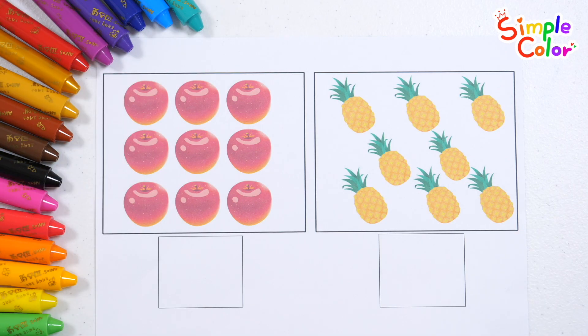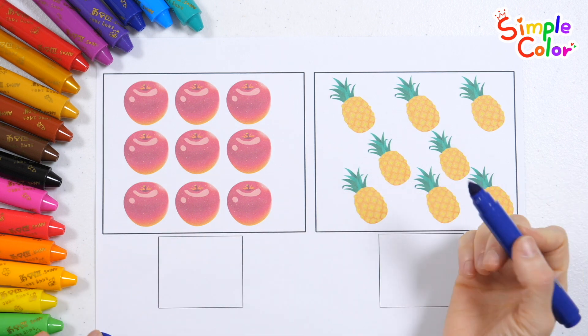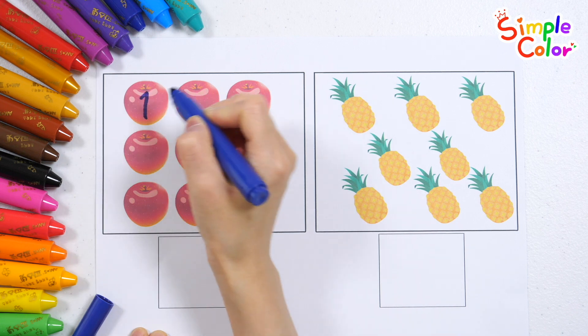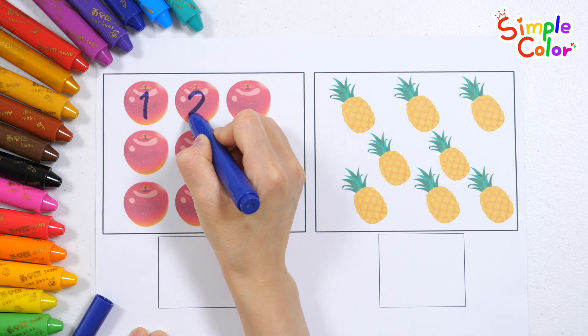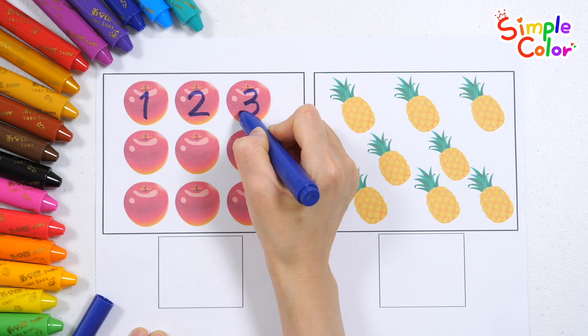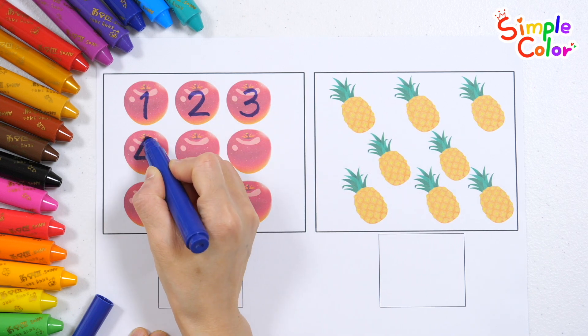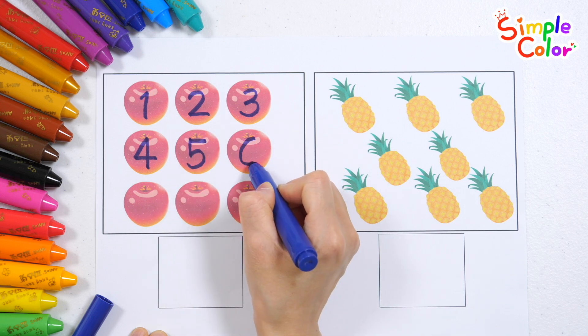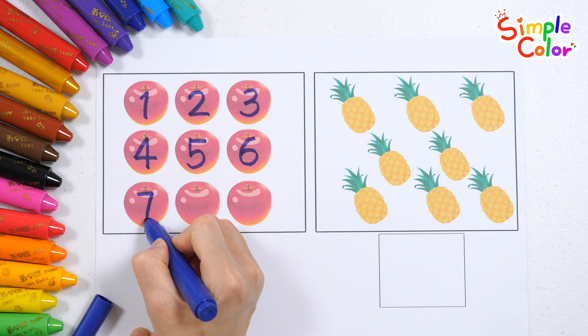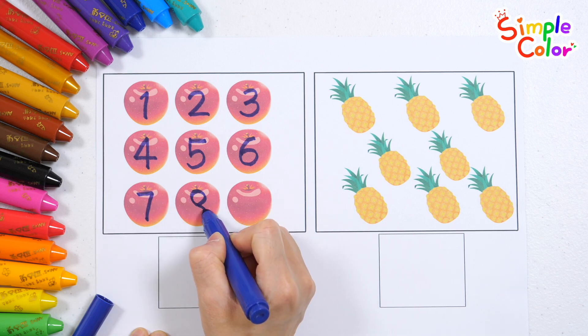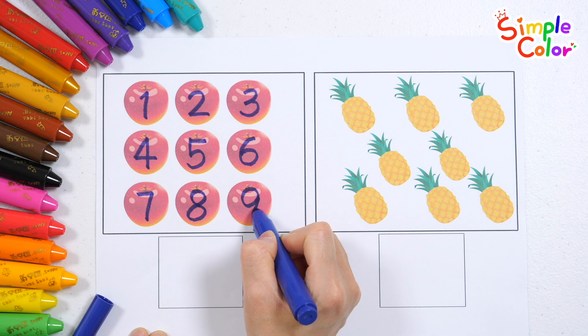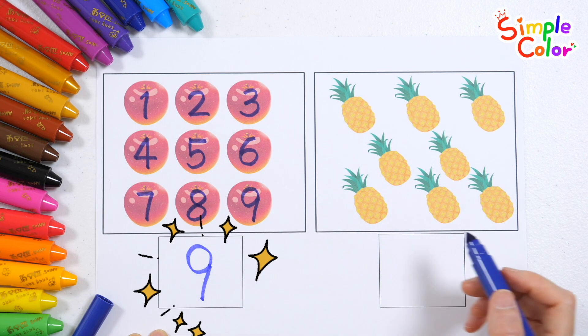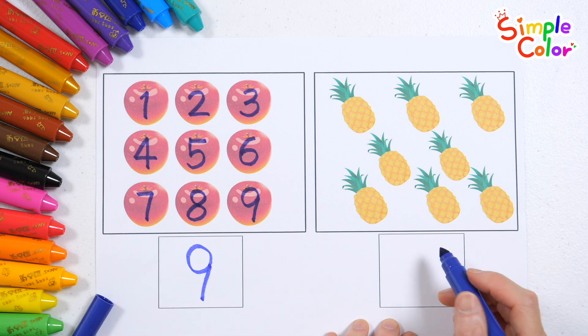There are apples and pineapples. Shall we count by writing the numbers one by one? One, two, three, four, five, six, seven, eight, nine. Nine apples.